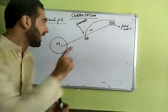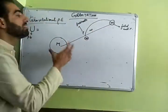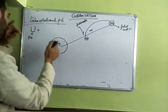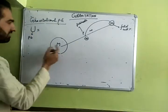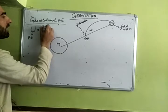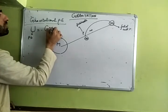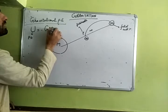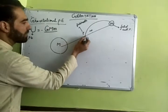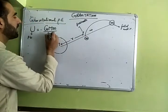And the gravitational potential energy of two point masses is equal to minus G capital M small m divided by r. Where have you brought it? Ultimately, suppose this distance is r, so I will write here as r.